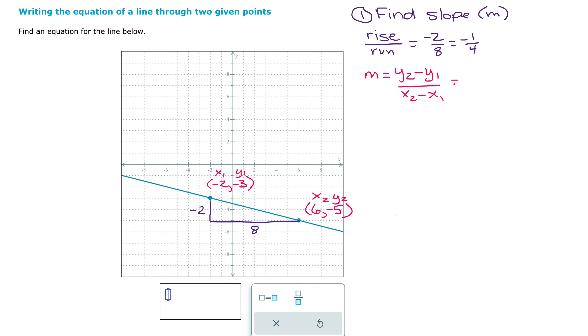But I'm going to label those and then plug in. So y2 is negative five and y1 is negative three. So we have negative five minus negative three. x2 is going to be six and x1 is negative two. So six minus negative two. These minus negatives change to plus. So we have negative five plus three, which is negative two. Six plus two, which is eight. So negative two over eight, which is negative one-fourth.